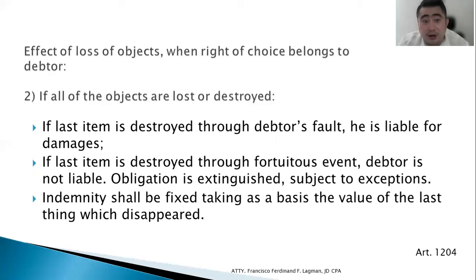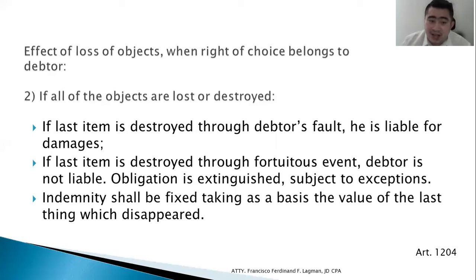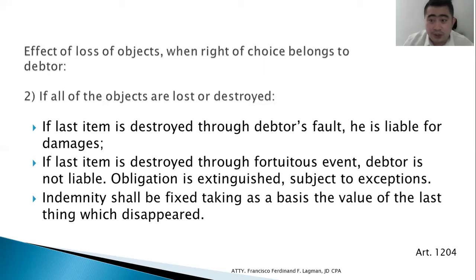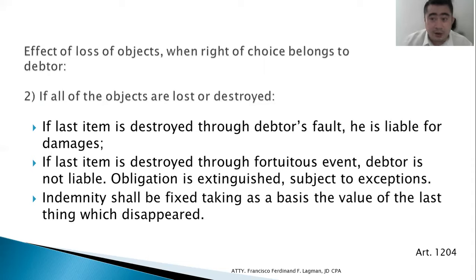What if all of the objects are lost or destroyed? If the last item is destroyed through the debtor's fault, he is liable for damages. If five prestations exist and the debtor destroys four but one remains, he is not liable. But if the remaining last item is then destroyed through the debtor's fault, he is liable for damages. If the last item is destroyed through a fortuitous event, the debtor is not liable.